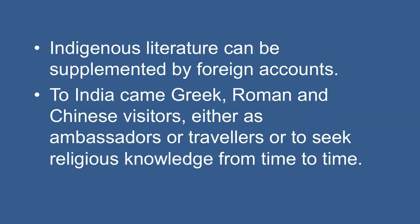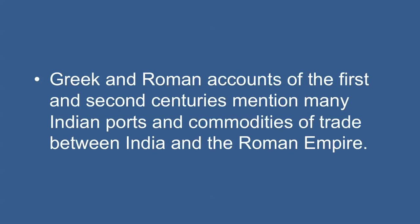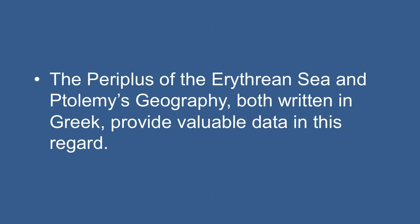Indigenous literature can be supplemented by foreign accounts. To India came Greek, Roman, and Chinese visitors either as ambassadors, travelers, or to seek religious knowledge from time to time. To the court of Chandragupta Maurya came a Greek ambassador called Megasthenes, who wrote Indica. Its original text is lost but parts have been preserved in fragments quoted by subsequent Greek writers. When read together, these fragments furnish valuable information about administration, social classes, and economic activities of the Maurya period. Greek and Roman accounts of the 1st and 2nd century mention many Indian ports and commodities of trade between India and the Roman Empire. The Periplus of the Erythraean Sea and Ptolemy's Geography, both written in Greek, provide valuable data in this regard.